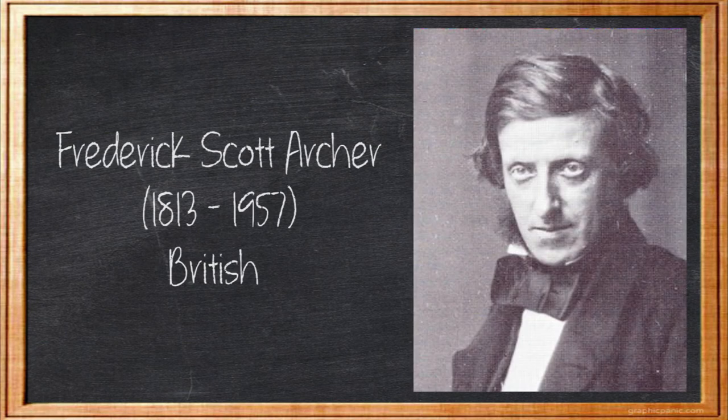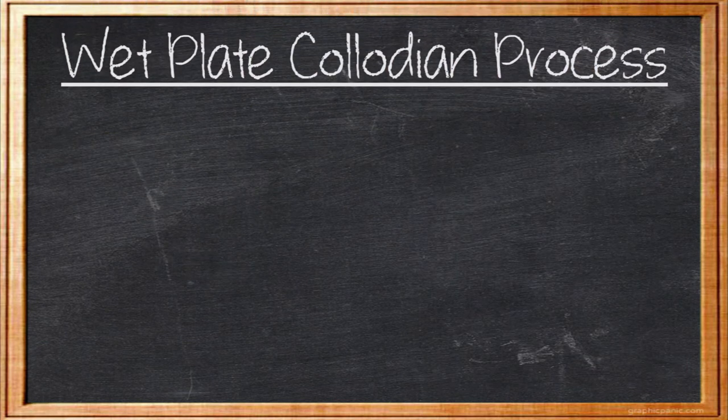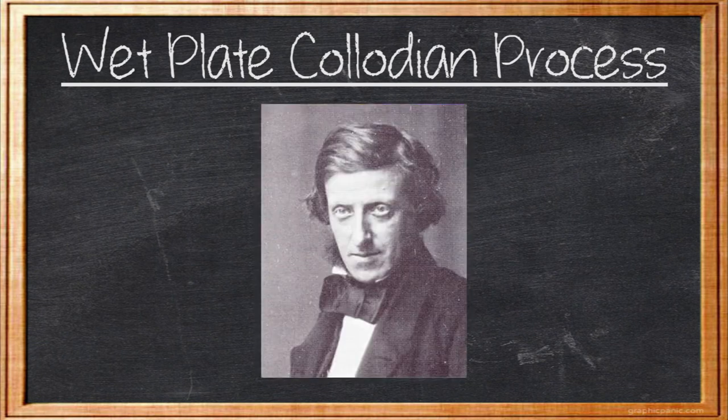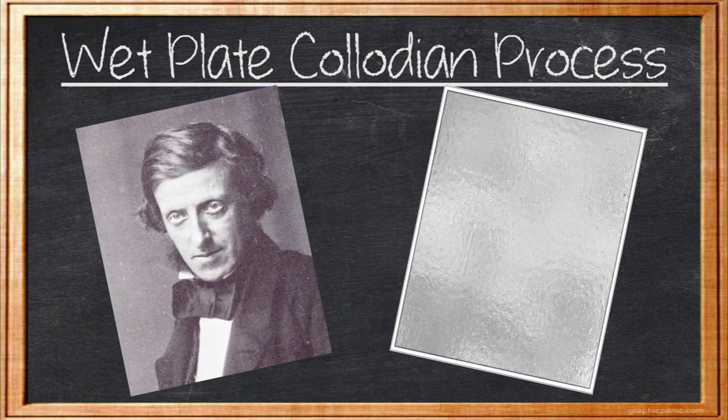This process was then taken a step further when Frederick Scott Archer invented what's known as the wet plate collodion process, where an image would expose in seconds and appear on a piece of chemical-soaked glass. And believe it or not, this is what the first motion picture was shot on — not Eastman's roll film, but on glass.